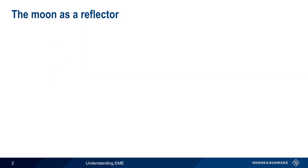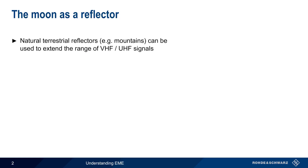Under normal propagation conditions, natural terrestrial reflectors, such as mountains, can be used to extend the range of signals at VHF and higher frequencies. This same principle can be applied to the Earth's moon, which can, under certain conditions, be used to reflect radio signals and thereby increase maximum communications range.